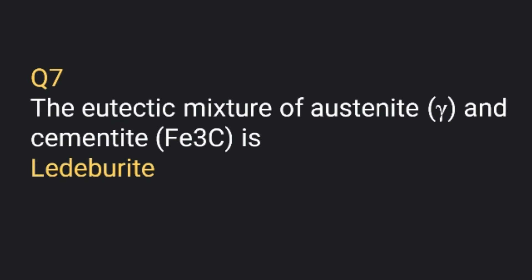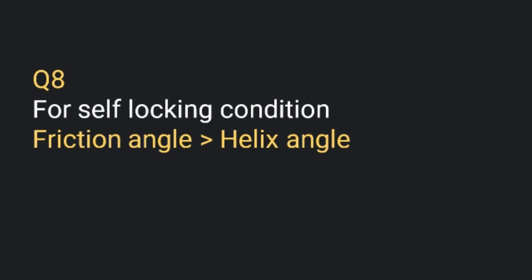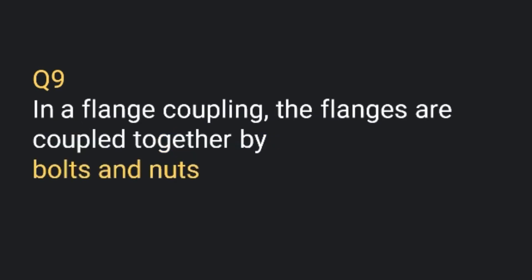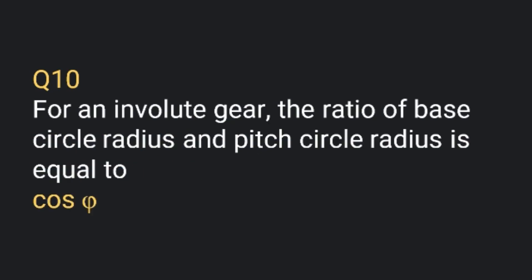For the self-locking condition, the friction angle should be greater than the helix angle. In a flange coupling, the flanges are coupled together by bolts and nuts. For an involute gear, the ratio of the base circle radius to the pitch circle radius is equal to cos φ.